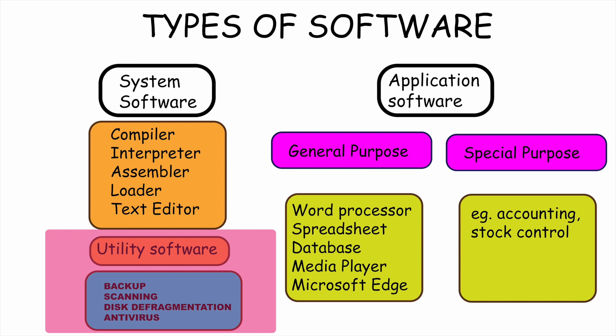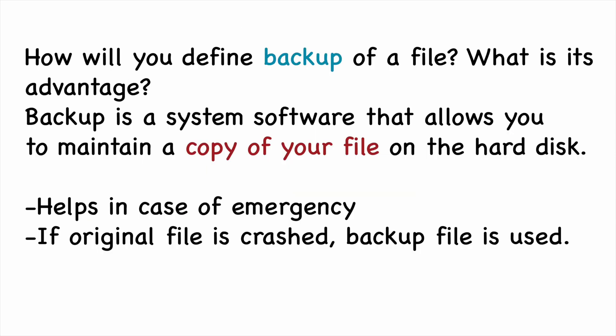Backup: A backup is a copy of the files made on the hard disk of the computer, so that in the time of an emergency — supposing the system crashes — you have a backup storage available. Backup is a system software that allows you to maintain a copy of your file on the hard disk. It helps in case of an emergency; if the original file is crashed, the backup file is used.